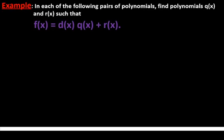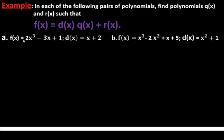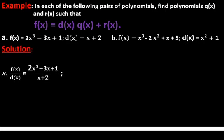Let's do some examples. In each of the following pairs of polynomials, find polynomials q(x) and r(x) such that f(x) = d(x)·q(x) + r(x). The first example is a degree three polynomial to be divided by a linear polynomial x+2. The second example is a degree three polynomial to be divided by a degree two polynomial. The first one is f(x)/d(x) = (2x³ - 3x + 1)/(x + 2).